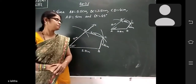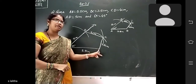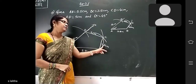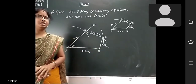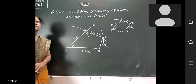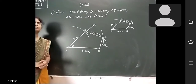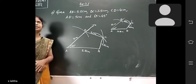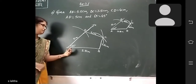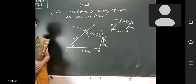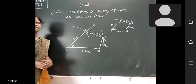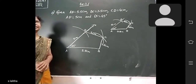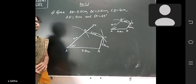Step 3: with center B, draw an arc BC = 3.5 cm. Step 4: with center A, draw angle A = 45 degrees. Step 4 is completed.